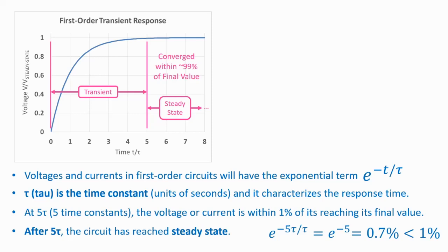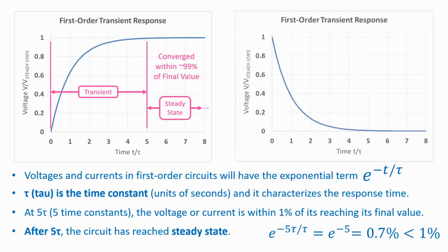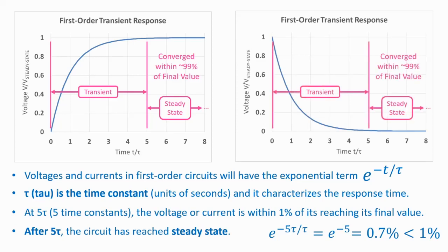The plot above shows a voltage or current exponentially rising from an initial value to a final value. It's also the case that a voltage or current can start at an initial value and fall to a final value, but the same definitions apply. The exponential fall is called a transient, and we say steady state has been reached when the values reach within 1% of their final values. Note that neither the initial nor the final value need to be zero — a voltage or current in a first-order circuit can start at a non-zero initial value and change to a different non-zero final value.